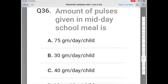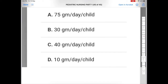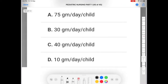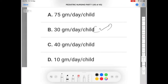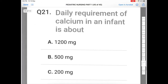Next question: what is the amount of pulses given in a midday school meal? Option A: 75 grams per day per child, Option B: 30 grams per day per child, Option C: 40 grams per day per child, Option D: 10 grams per day per child. The correct answer is B — 30 grams per day per child.